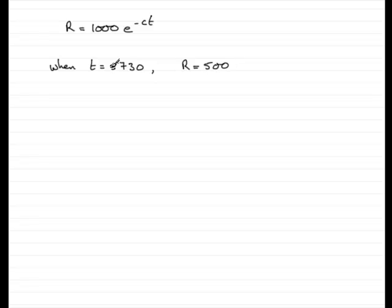So all we need to do is put these two values into the equation, solve it for the constant C. So therefore if we put those in, we've got for R, we've got 500 equals 1000E to the power minus C times T.